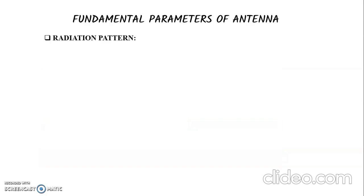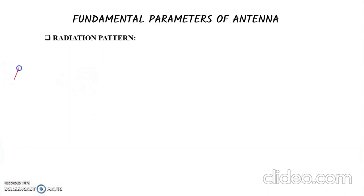Here are the fundamental parameters of antenna. There are various parameters and in this video I will mention those which are very important and considerable in every design scenario. The first parameter is the radiation pattern. When an antenna radiates EM waves, it forms a radiation pattern.